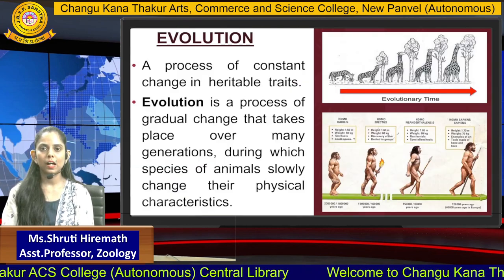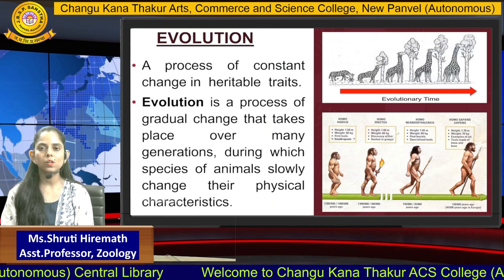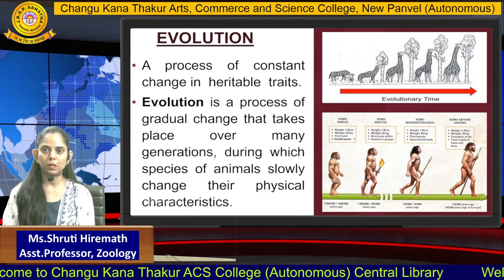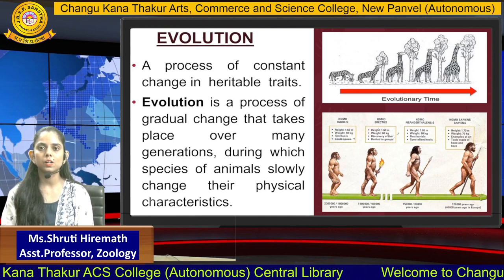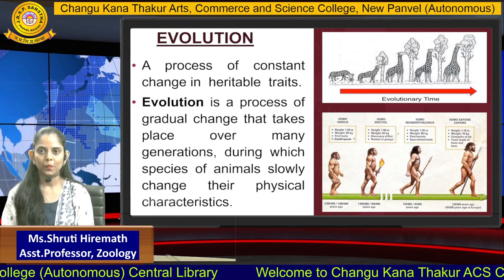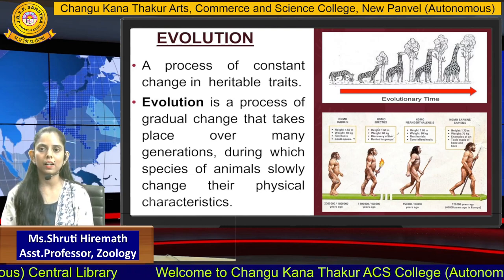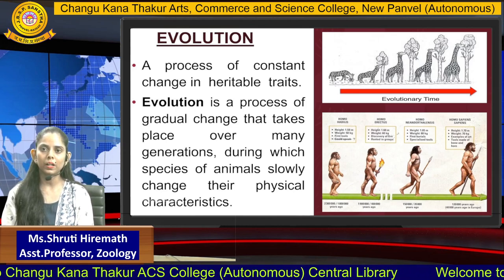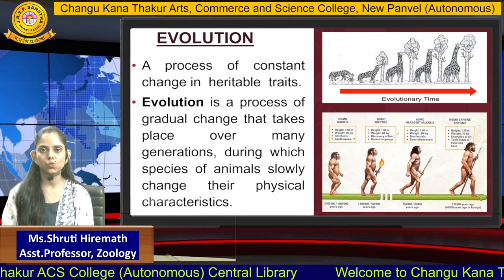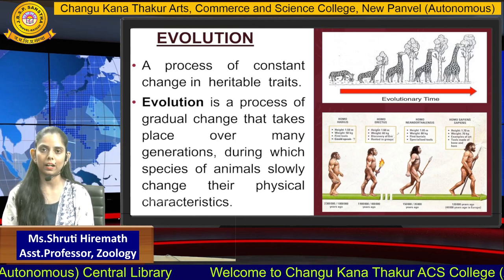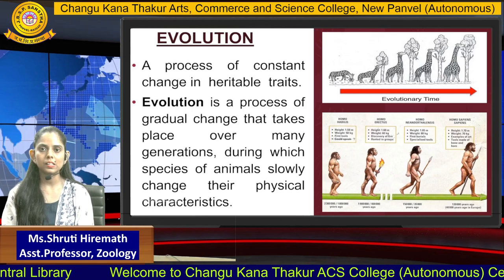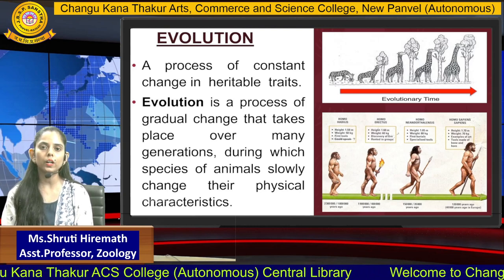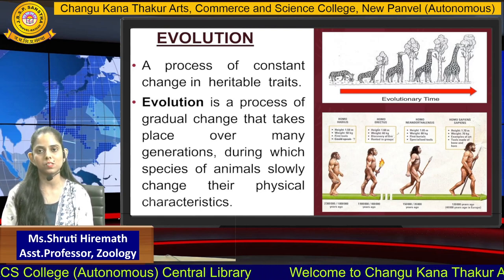When we talk about evolution, as a student of Zoology, we know that evolution is occurring at a very constant rate and we can observe it in and around us. If you simply compare a stone age man and today's intelligent man, you can see several similarities as well as differences. These changes have accumulated over time and they have resulted in evolution. Evolution is a process of constant change in heritable characters — those traits that can be passed from one generation to another. It is a process of gradual change that takes place over many generations during which species slowly change their physical characteristics.